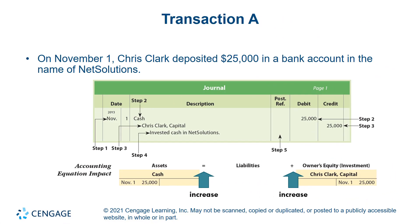This video provides various examples of journalizing transactions. November 1st, Chris Clark deposited $25,000 in a bank account in the name of NetSolutions. Right away we know the two accounts: cash and capital, and the balance of $25,000.